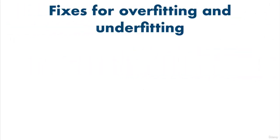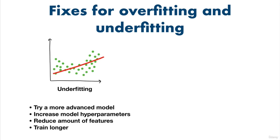Other ways to combat underfitting include using a more advanced model — this could mean a totally different model or increasing the number of hyperparameters on your current model. When we were cooking our chicken dish, we might alter one of the hyperparameters of our oven by turning it up. Instead of only using two layers in a neural network, you might use four. You could also reduce the number of features you're trying to model — maybe your data has too many features and the model is struggling to find patterns. Finally, you could train your model for longer, as sometimes models take longer to train than you'd expect.